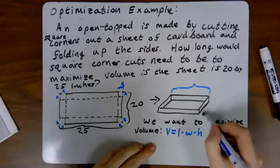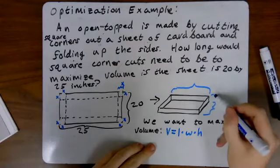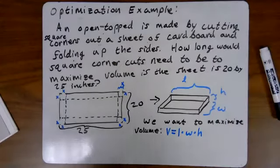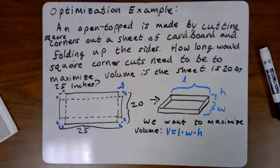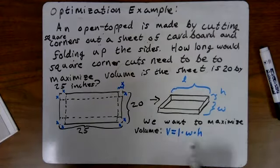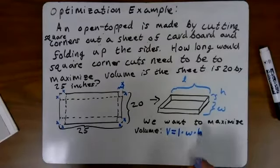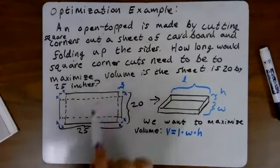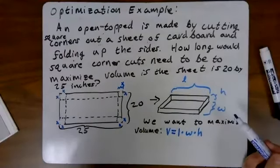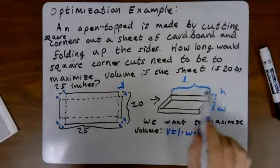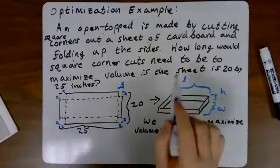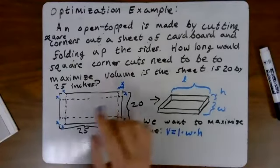The volume of a box is its length times its width times its height. So what we need to do is we need to figure out how we can write the volume in terms of the lengths of the cuts. Let's describe the length, the height, and the width using x.